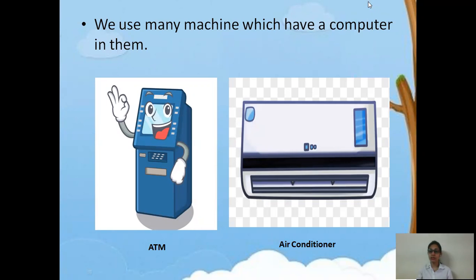Like whenever you use an air conditioner at your home, you can adjust the temperature. When you feel the temperature is low, you can increase it. And when you feel the temperature is high, you can reduce it. Why is it working so smartly? Because it has a computer in it.